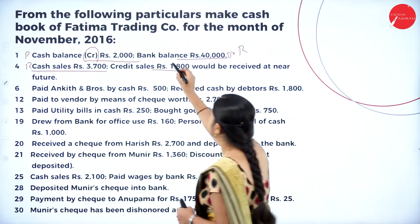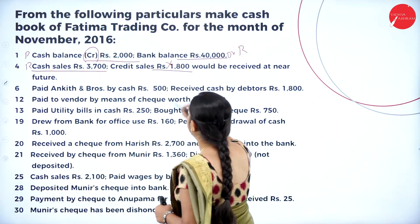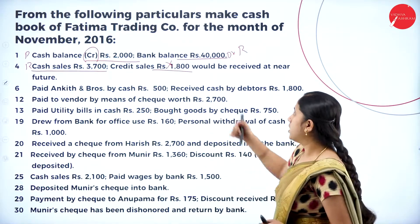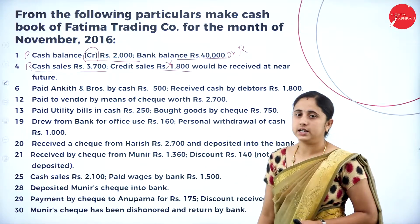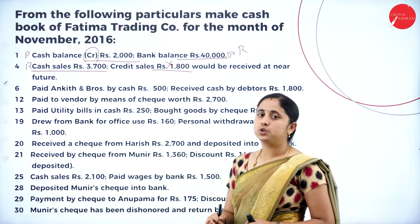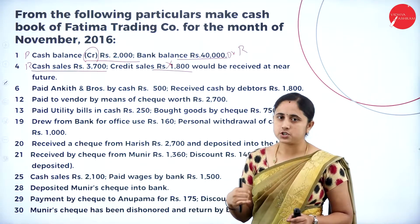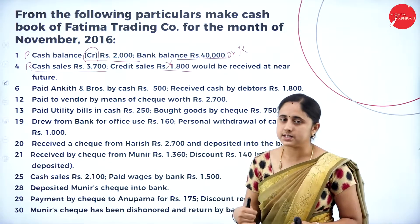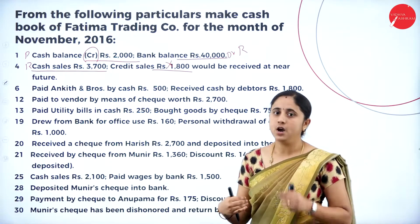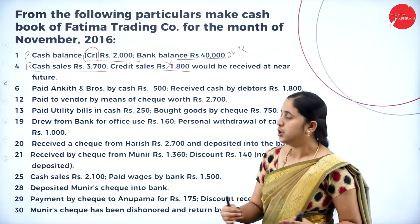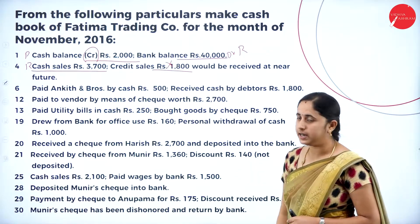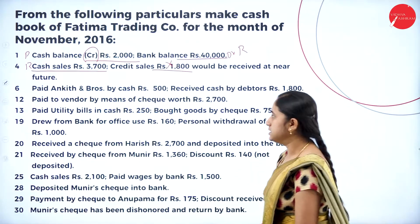We will not consider the credit sale of 1800 at present, because there is no cash coming in or going out right now. In the cash book, you record only after the transaction has taken place — that means either cash should come in or cash goes out. After receiving the money, you will record the 1800 in the cash book.